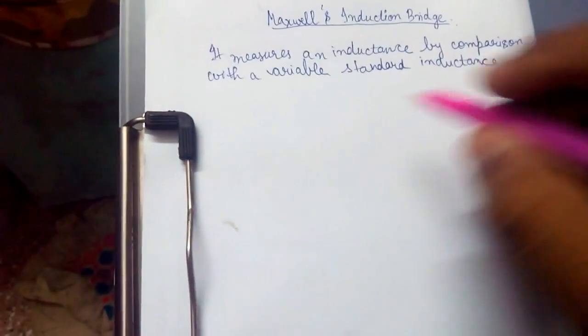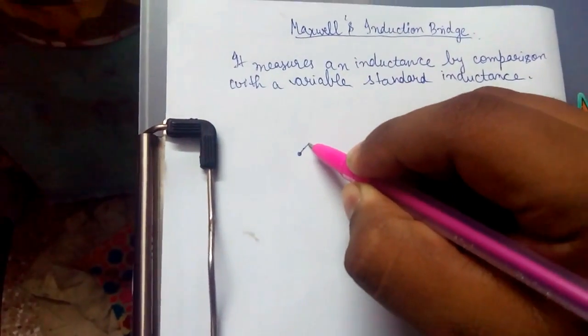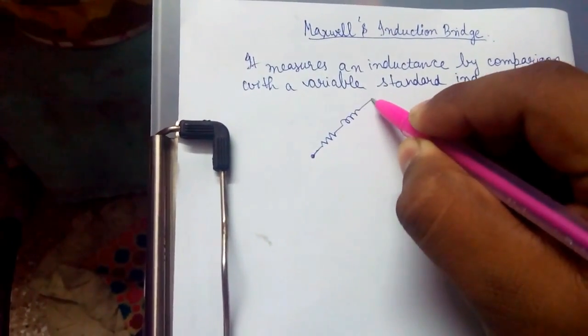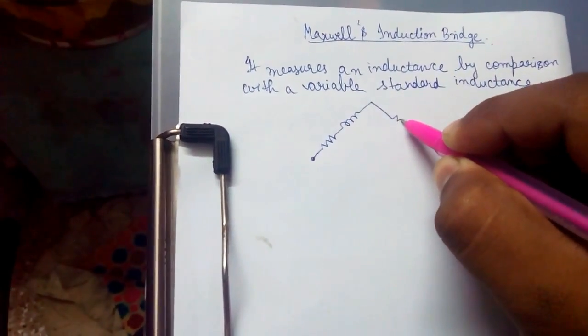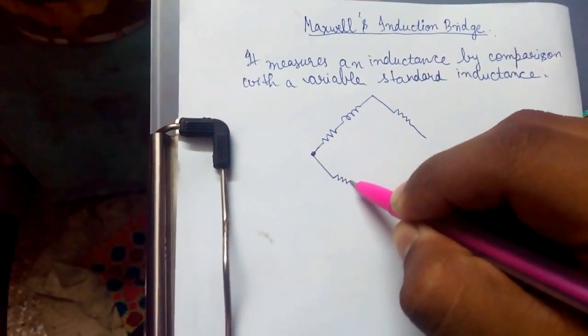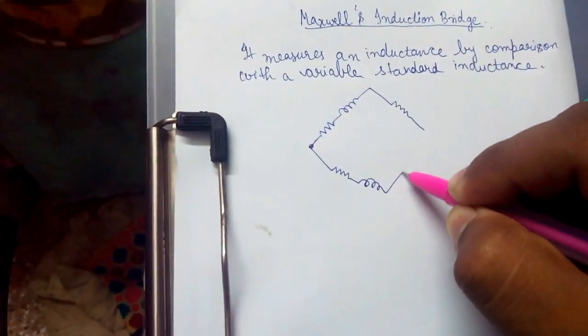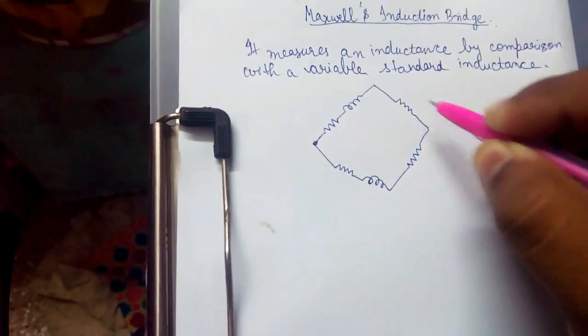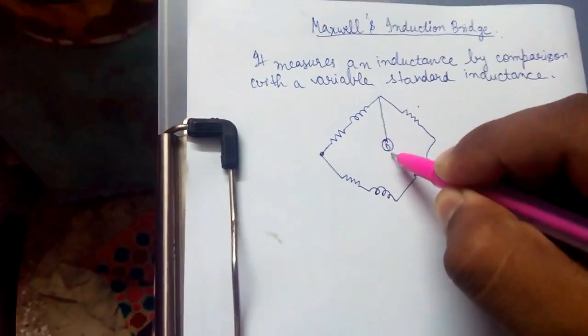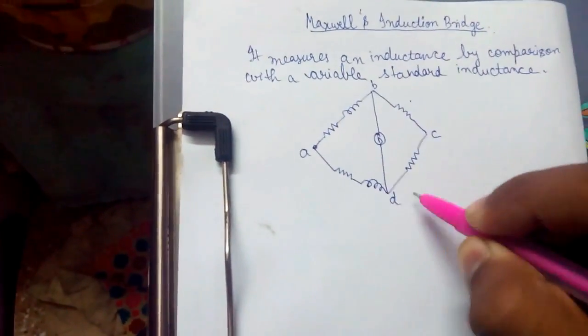Now let's make the circuit diagram. Let's name it as ABCD.